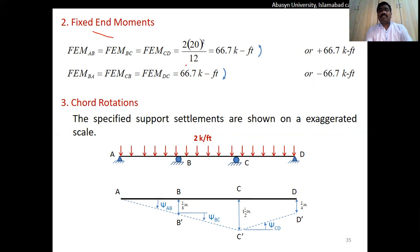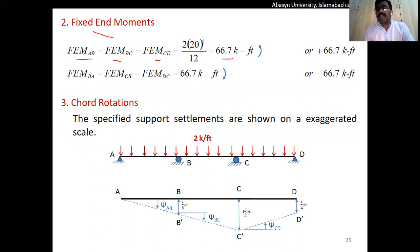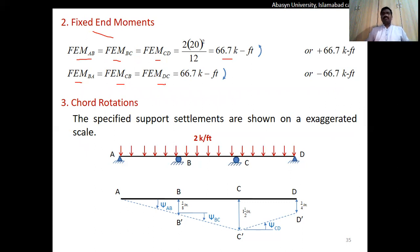The fixed end moments with the same UDL over each 20-ft span: FEM = WL²/12 = 66.7 kip-ft. So FEM_AB = FEM_BC = FEM_CD = +66.7 kip-ft and FEM_BA = FEM_CB = FEM_DC = −66.7 kip-ft.